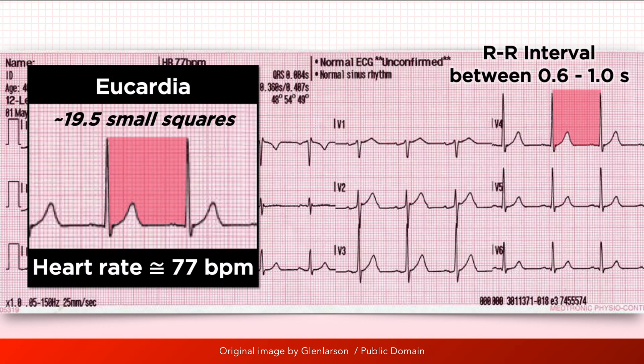The heart rate in a patient with sinus rhythm is between 60 to 100 beats per minute. This correlates with an RR interval between 0.6 and 1 second. And finally, the rhythm is regular — that is, the RR interval remains constant.